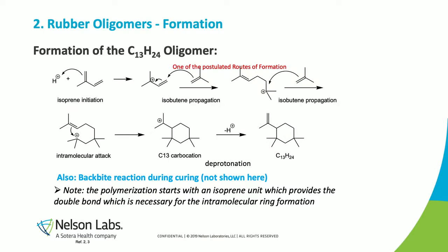For the C13 oligomer, the initiation of the reaction does not happen with isobutylene but with isoprene. The double bond of an isoprene monomer attacks the positive charge of the Lewis acid, and a carbocation is formed. In subsequent steps, two other isobutylene monomers are added. This creates a cation where there is an intramolecular attack forming a ring closure, which creates the C13 carbocation. With abstraction of a proton, the ring is closed and a stable C13 oligomer is formed.